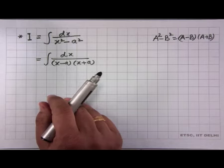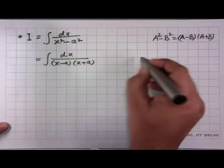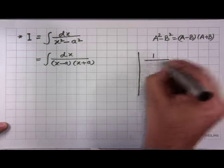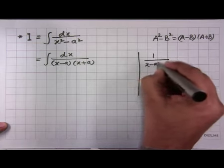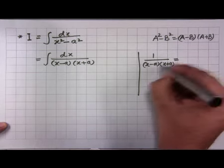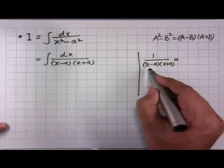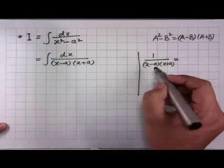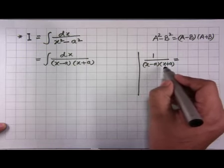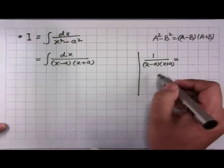Let us try to do this. Our integrand is 1/[(x−a)(x+a)]. Looking carefully at the numerator, which is constant, if I take the difference of the two linear terms — (x+a) minus (x−a) — I get 2a.